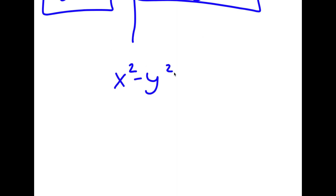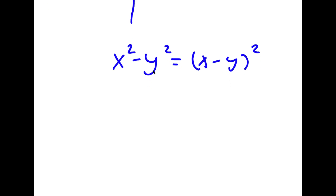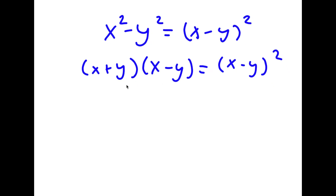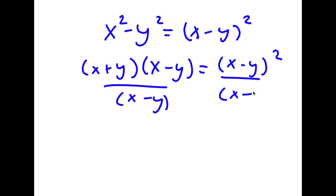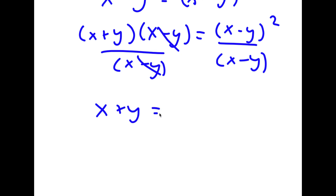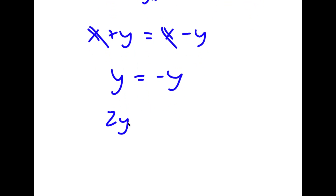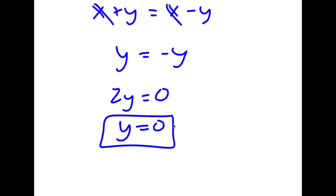Now I have another method of solving this. I have x squared minus y squared is equal to x minus y squared. I'm going to rewrite x squared minus y squared as x plus y times x minus y, then divide both sides by x minus y. These two cancel out, and I'm left with x plus y is equal to x minus y. Canceling the x's gives y is equal to negative y, meaning 2y is equal to 0, and y is equal to 0.